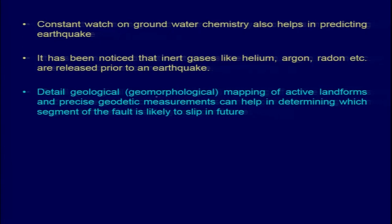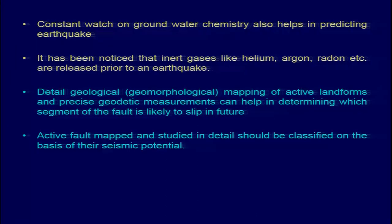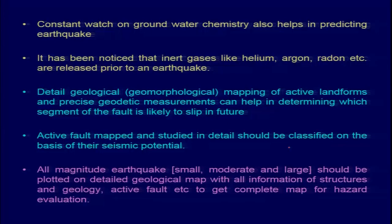Through detailed geomorphological investigations we can identify active landforms and determine which areas are prone to earthquakes and where slip is likely to occur. Active fault maps studied in detail should be classified on the basis of their seismic potential. All magnitude earthquakes — small, moderate, and large — should be plotted on detailed geological maps with all information on structure, geology, and active faults to get a complete map for hazard evaluation.